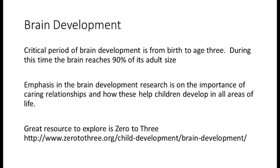Positive interactions that a child has with adults and the environment are crucial to optimal brain development and help build the foundation for all learning and development to take place. As we talk about motor and social-emotional development in this module, you will see the links back to the important concepts from Module 1.